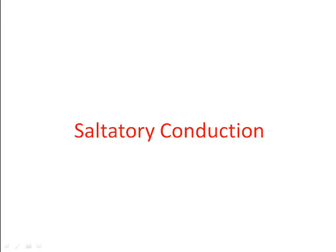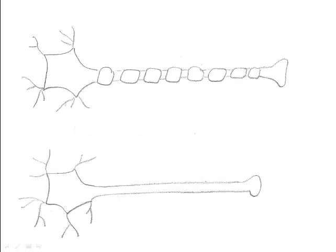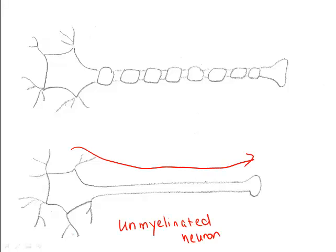First, let's take a look at saltatory conduction. We've examined how a wave of depolarization travels in unmyelinated fibers. We've seen that the wave of depolarization begins at the dendrite end and moves along the axon as a steady wave. In a myelinated neuron, Schwann cells with a myelin sheath act as insulators, and ions are only allowed in at the gaps, or the nodes of Ranvier.